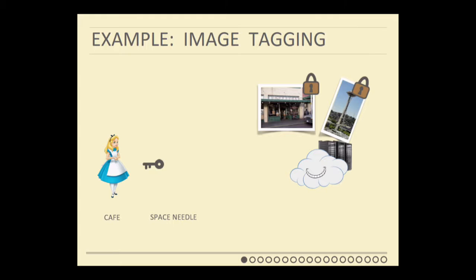This can help a lot — now the privacy of Alice is safe. For a long time, cryptographers really wanted to do this but didn't know how. People thought maybe it's even impossible. But in a breakthrough result in 2009, Gentry proposed a protocol which does this for classical data.